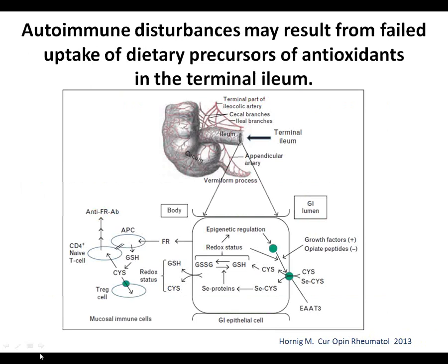Another observation involves the gut: growing evidence, including a recent paper, shows autoimmune disturbances may result from failed uptake of battery precursor antioxidants in the terminal ileum. There is a limitation in the capability to pick up antioxidant metabolites that keep inflammation in check. More and more evidence suggests some of these metabolites can be derived from bacteria, and the decreased uptake may be part of the overall pathogenesis together with suboptimal production of some neurotransmitters.